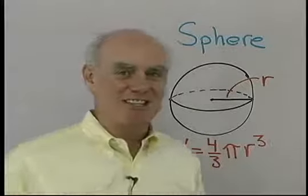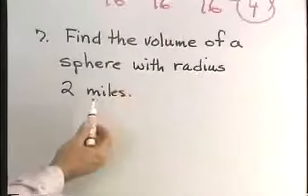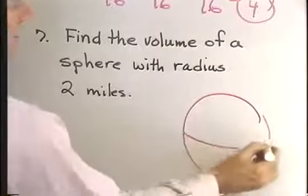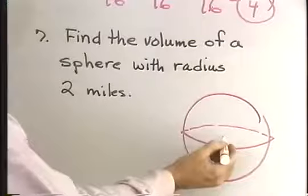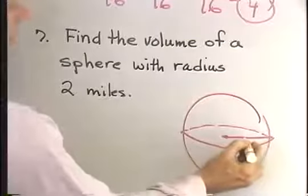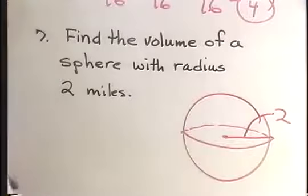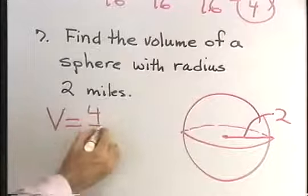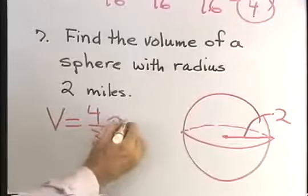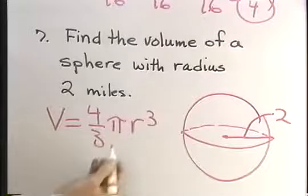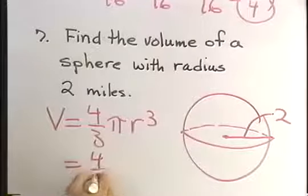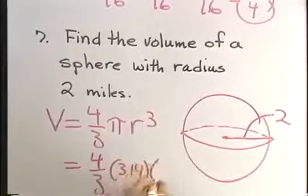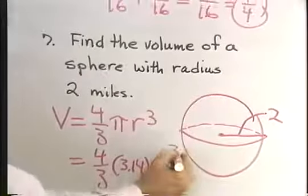Let's take a look at this example. Let's find the volume of a sphere with a radius of 2 miles. So I want the volume of a sphere, a figure that looks like this, like a beach ball or whatever. This has a radius of 2 miles. The formula for the volume of a sphere is v equals 4 thirds pi r cubed. And pi is 3.14, so I have 4 thirds times 3.14 times 2 cubed.